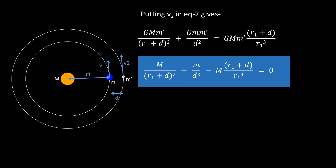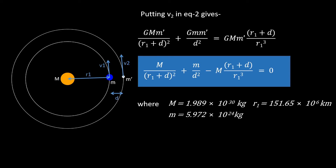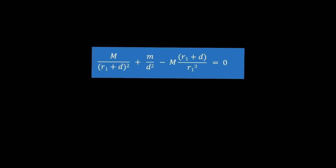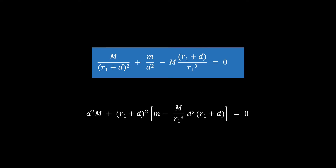The only unknown in this equation is d. Mass of the Sun M, mass of the Earth m, and the distance between them r1 are all known constants that can be looked up. All we need to do is solve for d. Since it is an equation of degree 4, it would be quite cumbersome to solve by hand, so let's solve it numerically using Newton-Raphson's method. Before proceeding, let's simplify it by multiplying throughout by (r1 + d)² and d², and grouping the second and third terms to get a cleaner form that will be easier to put into a numerical solver.